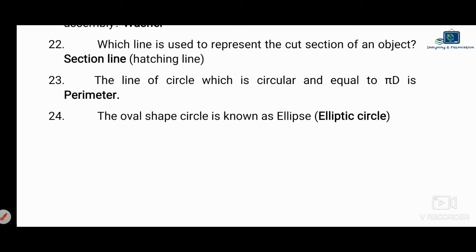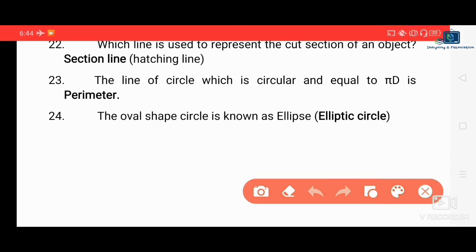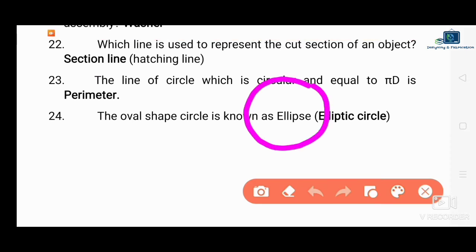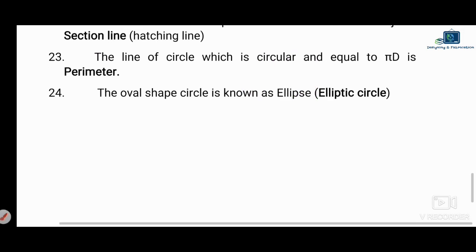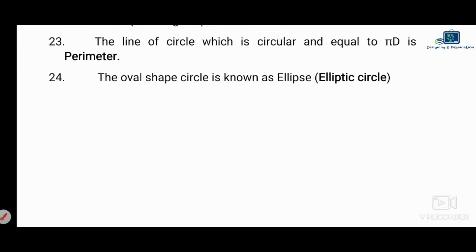Next question: the line of a circle which is circular and equal to π×D is called what? The answer is circumference — also called the perimeter of the circle. Perimeter and circumference refer to the same thing for a circle: π×D.